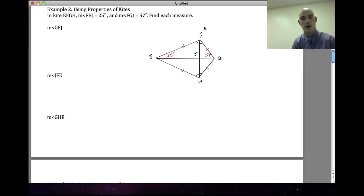Let's use the properties to find what we want. I'm looking for GFJ. Well, I also know that this is a 90-degree angle here, right, because the diagonals of a kite are perpendicular. So I have a triangle here that has 90 degrees, 57 degrees, and some other angle that I don't know. I'll call it x equals 180. Well, when I solve for this, I have 147 plus x is equal to 180, so I subtract 147 from both sides and I get x is equal to 33.